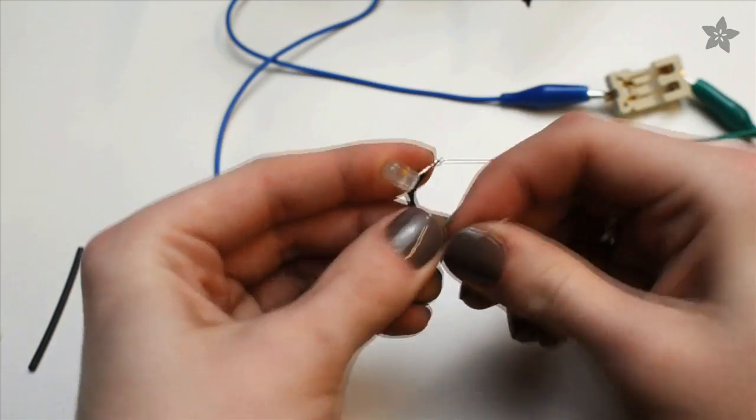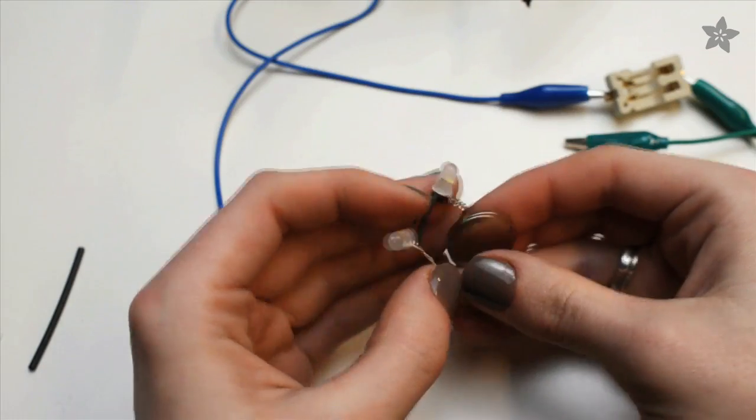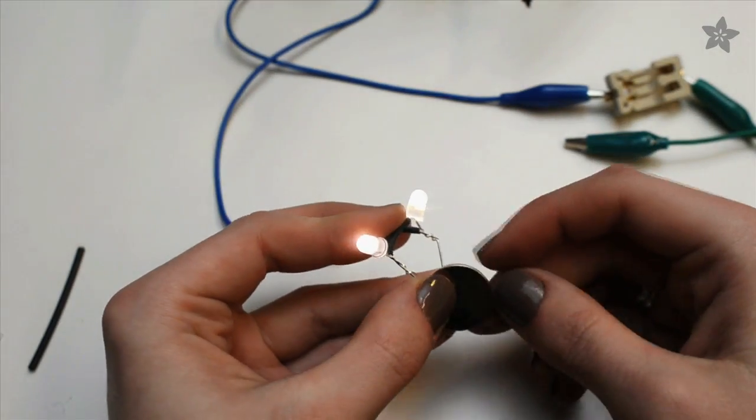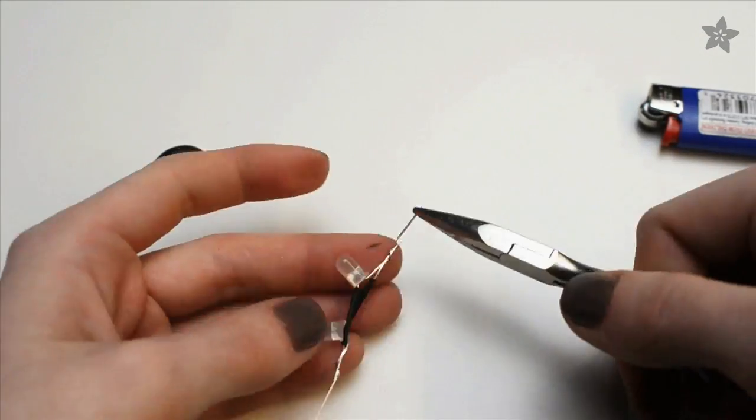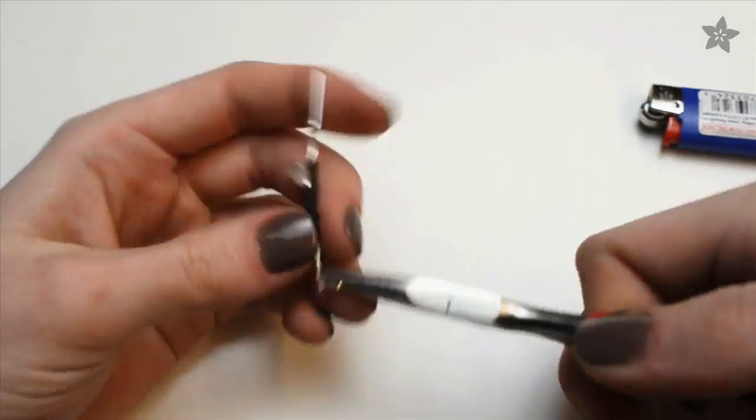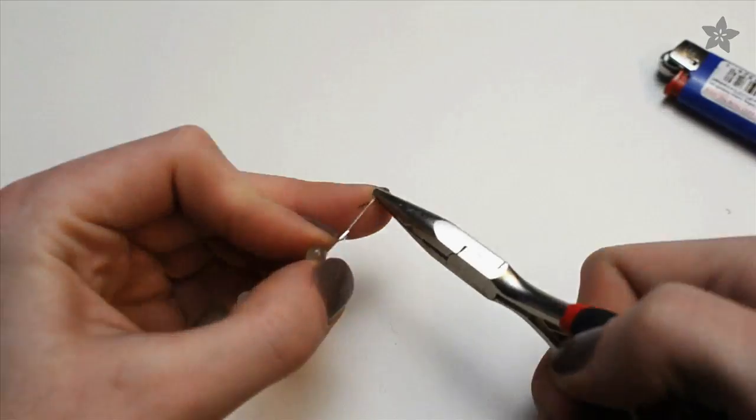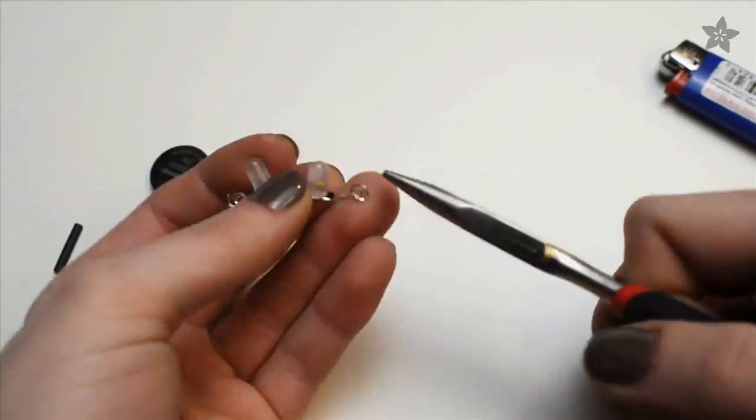Bend your new LED assembly around so you can test it out on your battery and remember which lead is positive and which lead is negative. Mark the positive with a marker. Straighten the leads back out and use a pair of pliers to twirl the ends into little spirals. This will give you something to stitch through rather than trying to stitch onto a straight wire.